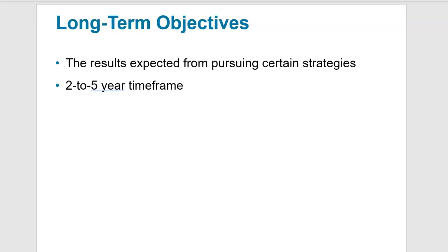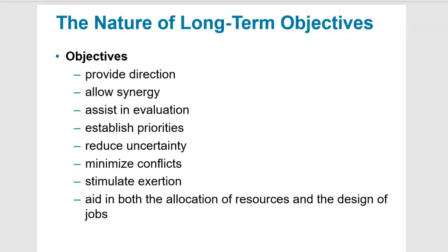Long-term objectives are going to be timeframes where we're moving somewhere between 2 and 5 years. Some companies have objectives that can be 10 or 20 years, but the most common is a timeframe between 2 to 5 years. Some common objectives for long-term consideration would be a general direction for the company, creating synergy between the company's products or divisions, assist in evaluation, establishing priorities, reducing uncertainty, minimizing conflicts, stimulating exertion, and aiding in both allocation of resources and design of jobs.